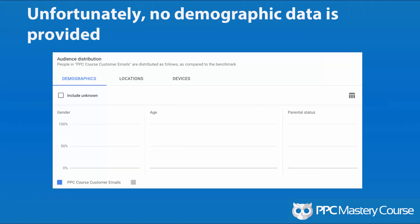Unfortunately, the demographic data for these people wasn't pulled in — I don't get to see age, gender, parental status, or their location and devices. It's been about 18 hours since I uploaded this list, so it could still be waiting to populate. It might be because this list can only be used in search, YouTube, and Gmail ads — not for remarketing. If anybody has thoughts on why this isn't populating, I'd love for you to let me know in the comments section.